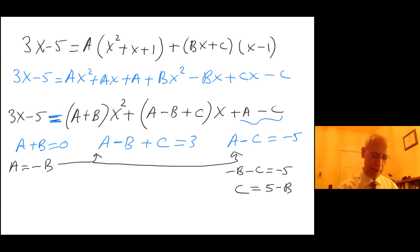Now I can use this middle one. Instead of A, I'm going to put minus B from here. Then I have minus B, instead of C I have plus (5 minus B), and that all equals 3. This gives me minus 3B plus 5 equals 3, so minus 3B equals negative 2.